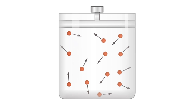To understand oxygen-gas exchange at the lungs, you must first understand what air pressure is. Air is made up of gases. In our atmosphere, that consists of mostly oxygen and nitrogen.